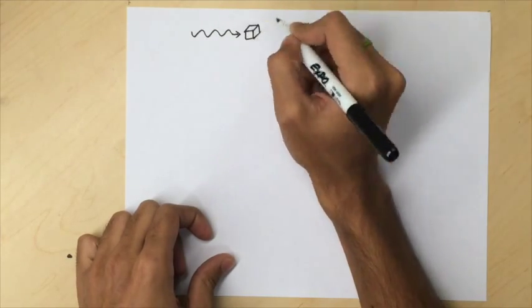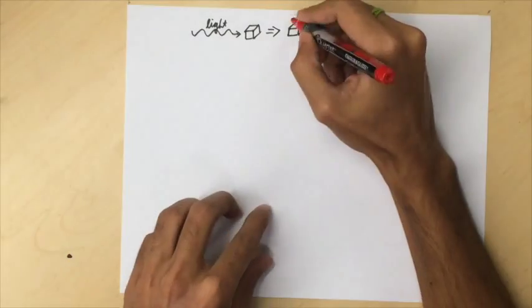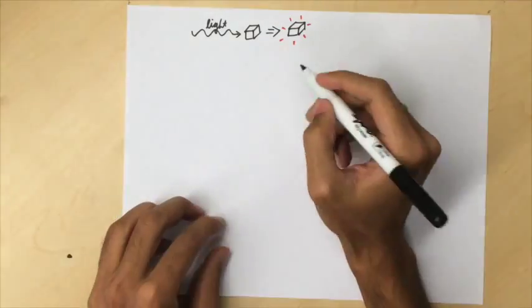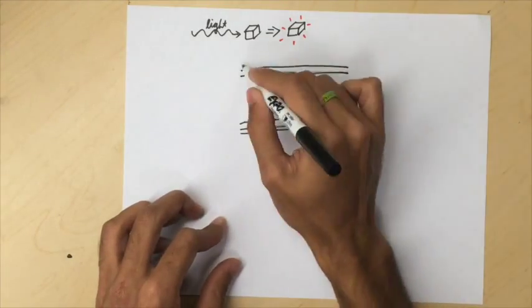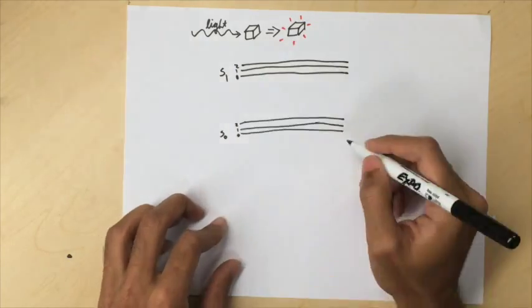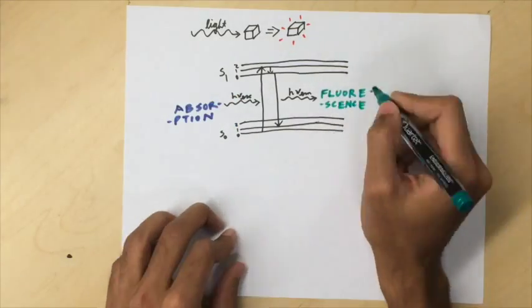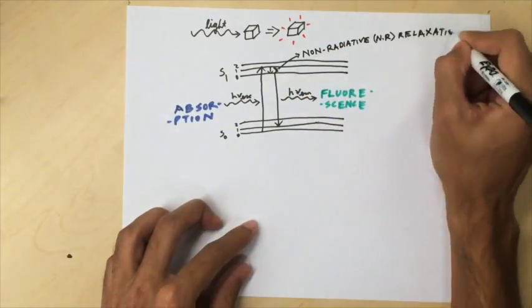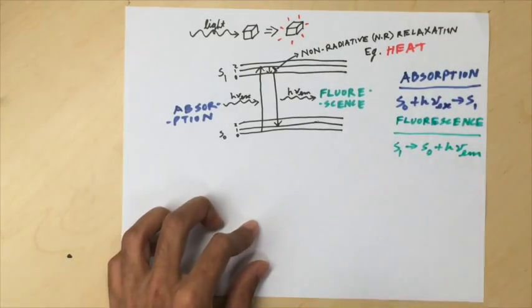But first, what is fluorescence? It is the emission of light by an object after it has absorbed electromagnetic radiation. Specifically, electrons in the ground vibro-electronic state of an atom or molecule denoted by S0 absorb incident radiation and jump to an excited state denoted by S1. The subsequent relaxation of the electron from S1 to S0 results in emission of light as fluorescence.